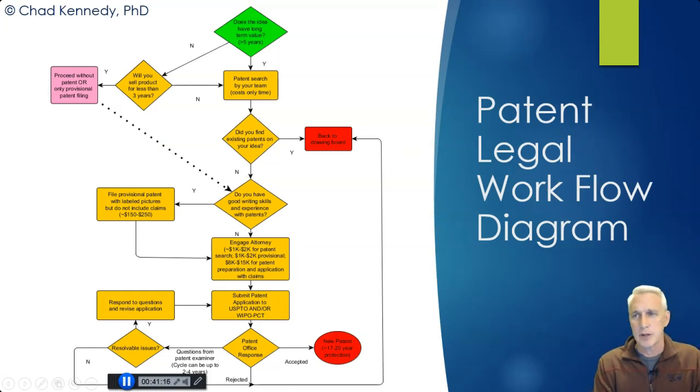So from a business standpoint, you want to look at the patent legal workflow. So this is another diagram that we didn't have before. And again, it starts with the green and with the reds or sort of a purplish color. Does the idea have a long-term value? Greater than five years? Yes. Then you really want to go through your patent search by your team. It only costs you time. If not, will your product sell for less than three years? Then you can proceed without a patent. Only file provisional. This is what we've been talking about before.